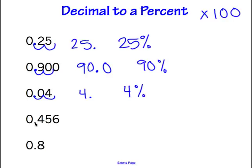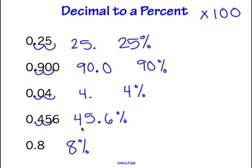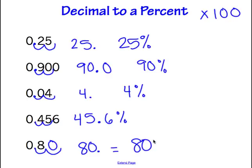Next, moving our decimal over two places — for this one, the decimal is going to be left in the answer because we have an extra digit after moving it over twice, so we write this as 45.6%. For the last example, students often look at 0.8 and say the answer is 8%. That's actually not correct, because if we move the decimal two spots to the right and multiply by 100, we're left with an empty hole that we fill with a zero, making our answer 80%.